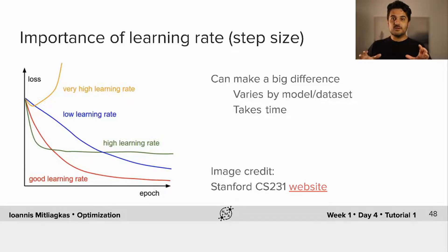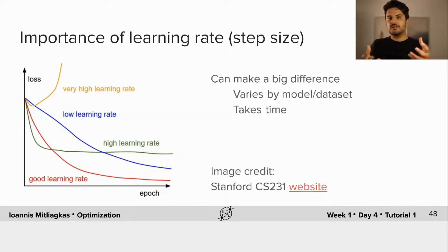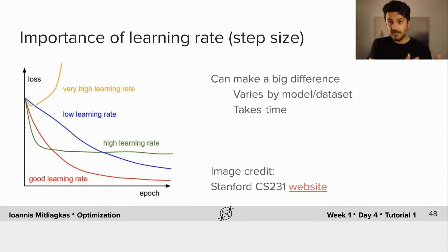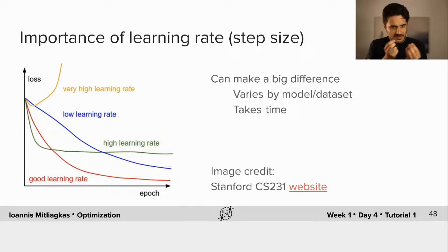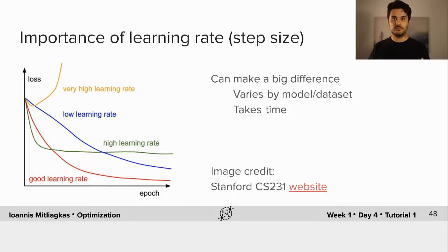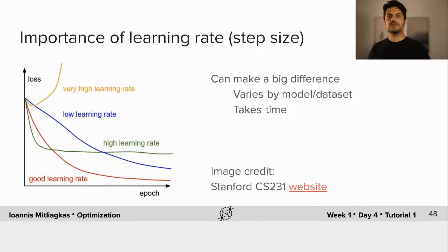We've seen already when we were discussing curvature and those ideas that choosing a good step size or learning rate can make a big difference. And we're sometimes constrained by the presence of different curvatures on the same objective, which leads to slowdowns.